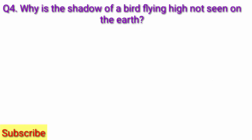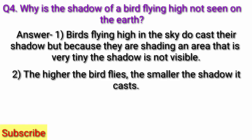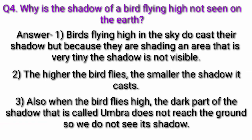Question 4: Why is the shadow of a bird flying high not seen on the earth? Answer: Birds flying high in the sky do cast their shadow, but because they are shading an area that is very tiny, the shadow is not visible. The higher the bird flies, the smaller the shadow it casts. Also, when the bird flies high, the dark part of the shadow called the umbra does not reach the ground, so we do not see its shadow.